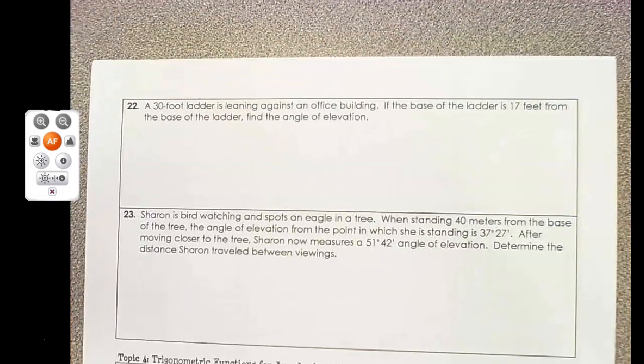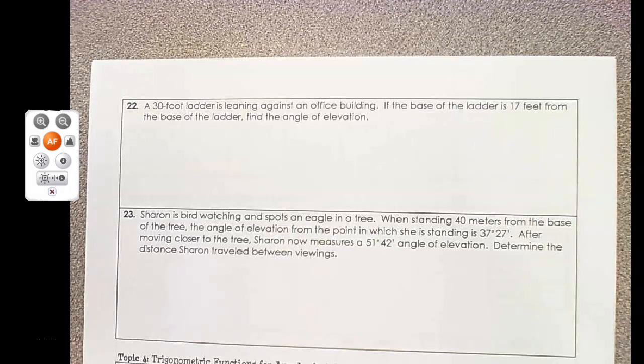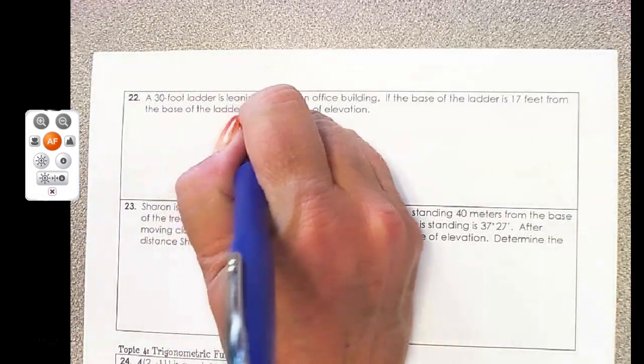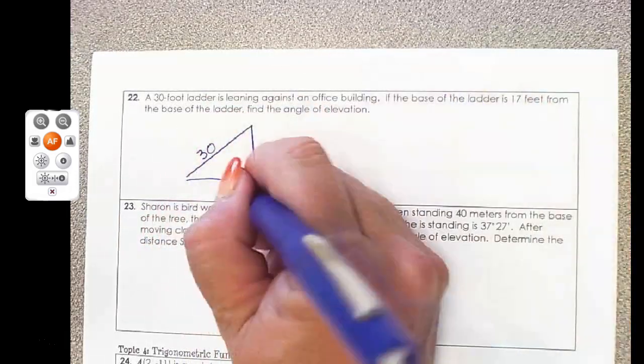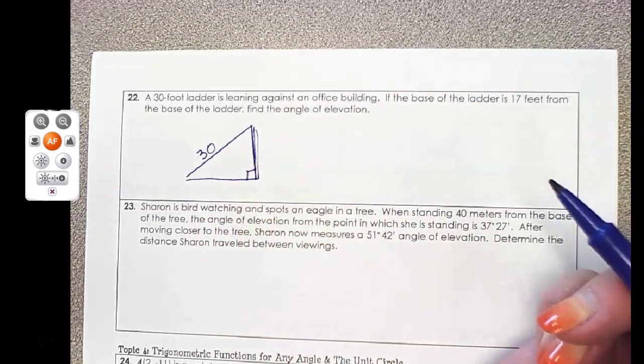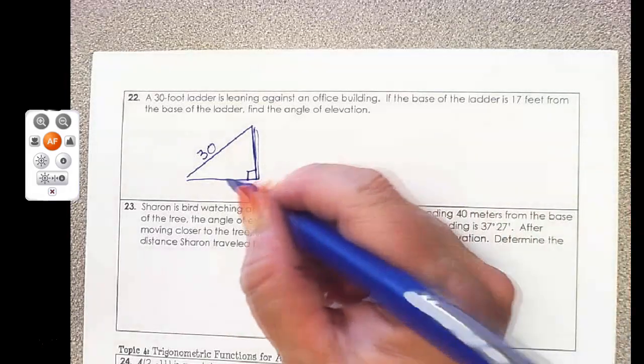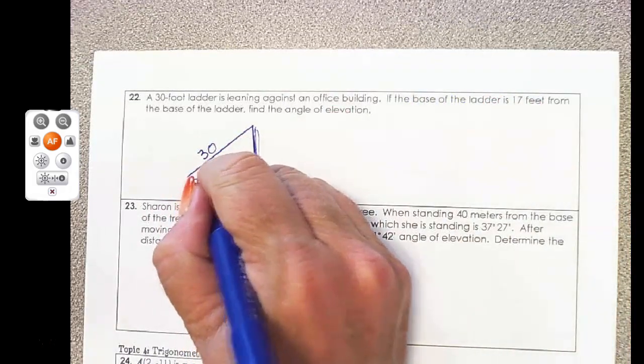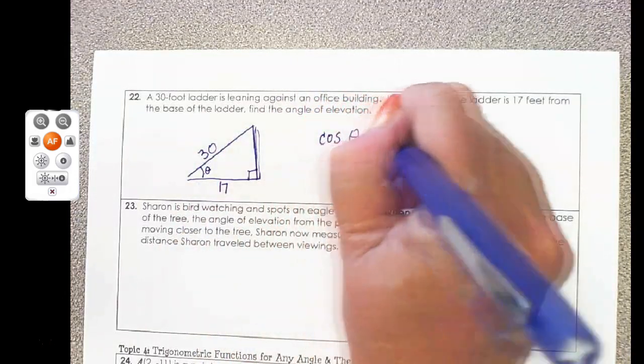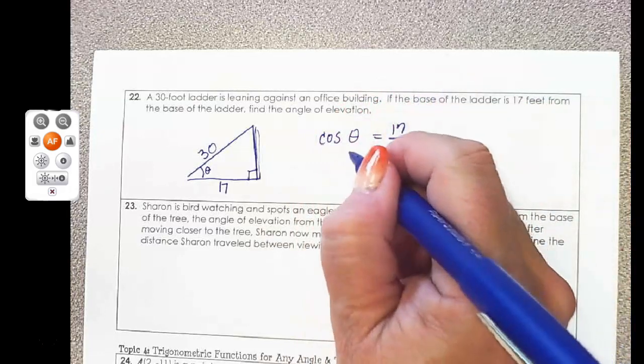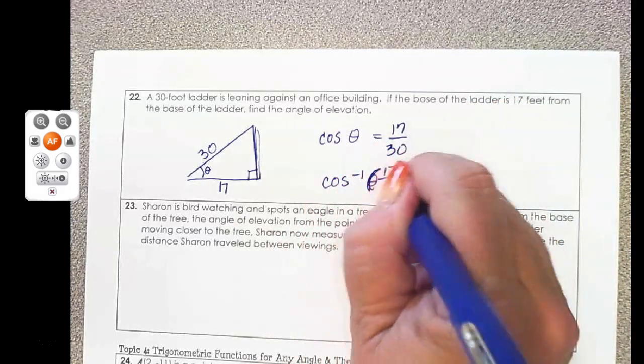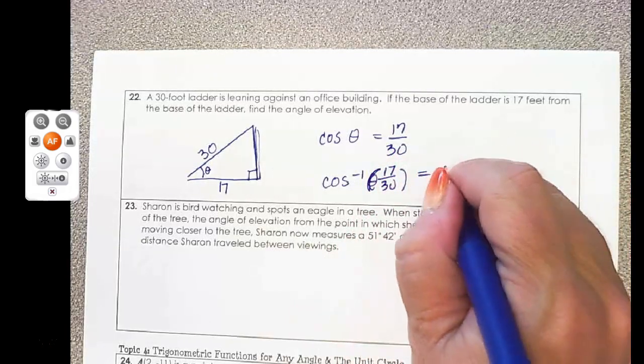So in number 22, I need to draw the picture. A 30 foot ladder is leaning against an office building. The base is 17 feet from the base of the building. We know if our ladder is leaning against an office building, here is where the 30 goes on the hypotenuse. And then my office building is always at a right angle. And the base is 17 feet. And you're supposed to find the angle of elevation, which is the angle as you're looking up. So we've got adjacent and hypotenuse. So that's cosine. And I set up my formula. And whenever I'm looking for the angle, that tells me I'm doing inverse cosine. So the inverse cosine of 17/30 is, and I use my calculator to tell me 55.5 degrees.